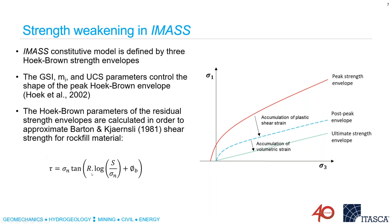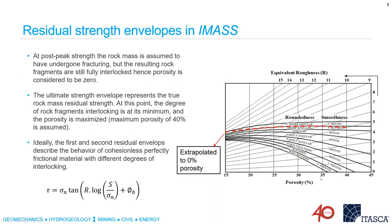For estimation of the characteristics of the residual envelopes, we fit the Hoek-Brown parameters of the residual strength envelopes to approximate Barton's shear strength criteria for rock fill material. In this equation, R is the equivalent roughness, S is the intact rock strength of each fragment, and phi_b is the basic friction angle between the rock fragments. This shear strength criterion gives us the degradation of shear strength as we introduce porosity to the rock mass and move from post-peak envelope to ultimate strength envelope.